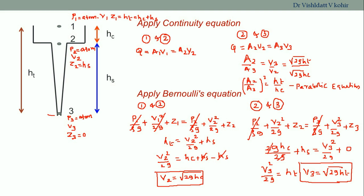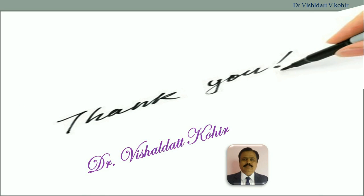However, it is difficult to obtain a parabolic shape in the mold, so normally we go for a tapered sprue. Since ht equals hc plus hs, ht is always greater than hc, and therefore a2 is greater than a3. This means the area at point two must be greater than the area at point three, which leads to the tapered shape of the sprue. These relations will help you in solving numerical problems and designing the sprue for a given gating system.